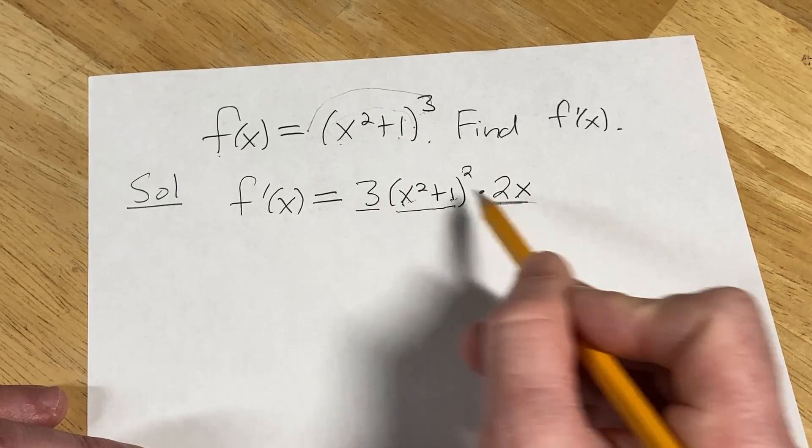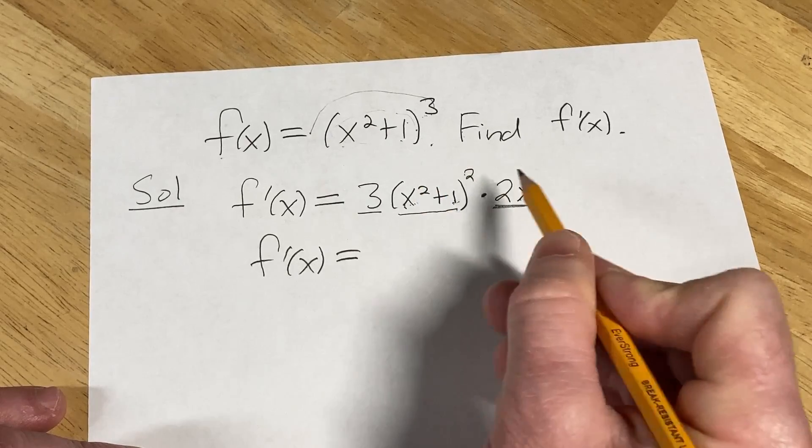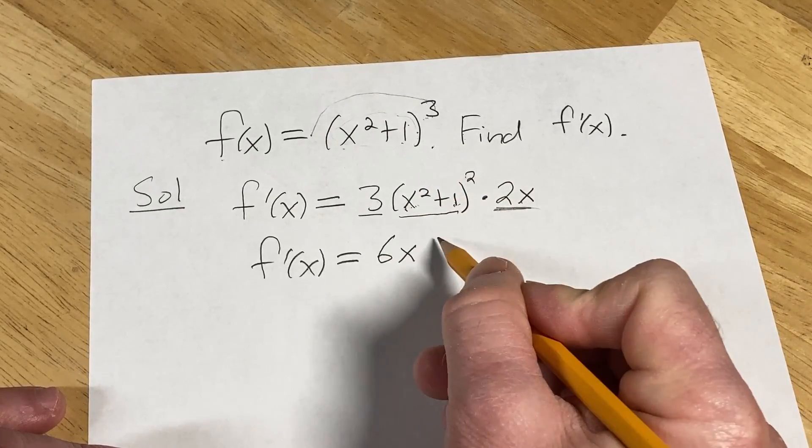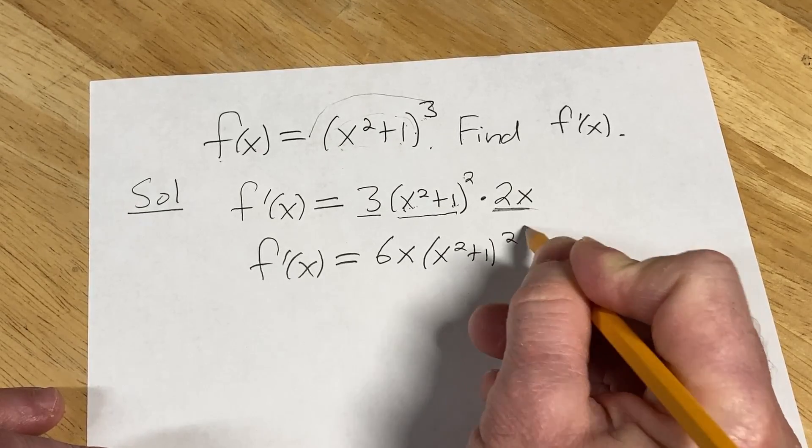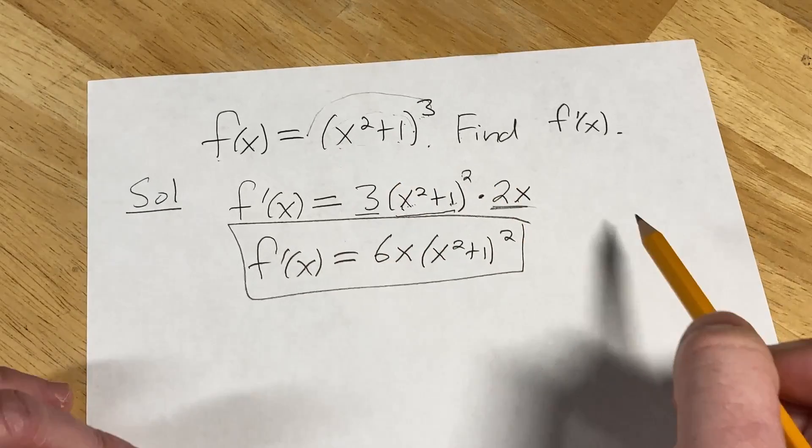Lastly, we can multiply the 3 and the 2x, so f'(x) equals—well, 3 times 2 is 6—so we get 6x(x² + 1)² and that would be the final answer. It would be the derivative of (x² + 1)³.